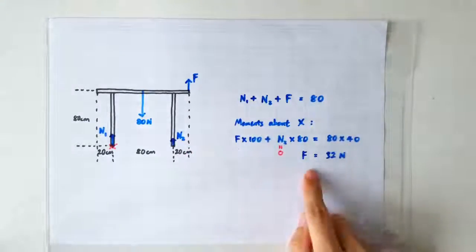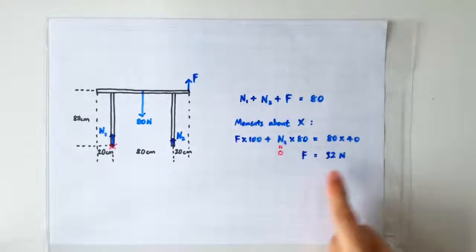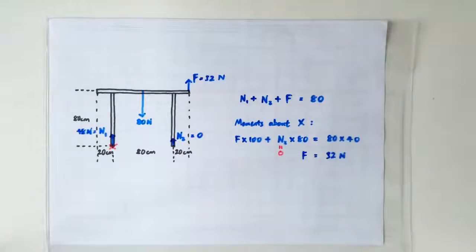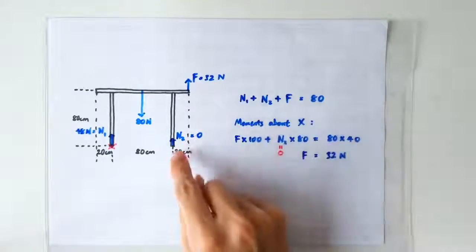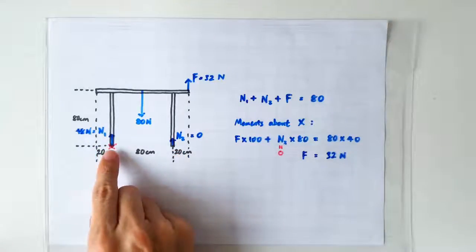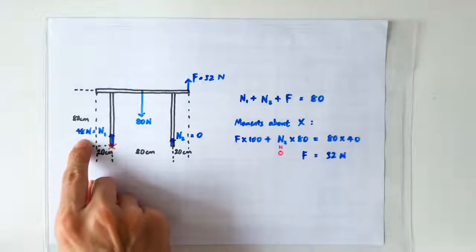So the table is just about to rotate when the lifting force is 32 newtons. At this instance, the lifting force is 32 newtons. There's no normal contact force between the right leg and the floor. So the normal contact force on the left leg has got to be 48 newtons.